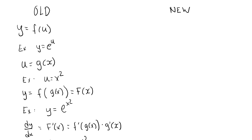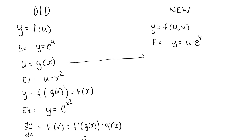Now let's consider a new scenario. In this new scenario, y is a function of not only u, but also v, so y is now a function of two variables, u and v. As an example, let's say that y is equal to u times e to the v. We keep the assumption that u is some function of x, g of x. But in this case, v is itself a function of x — that's another function, h of x. As an example, we could go with u equal to x squared, and v equal to 4x plus 1.